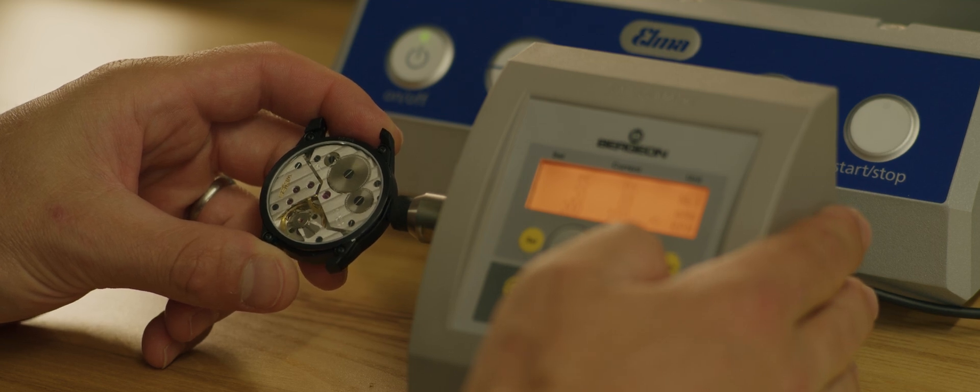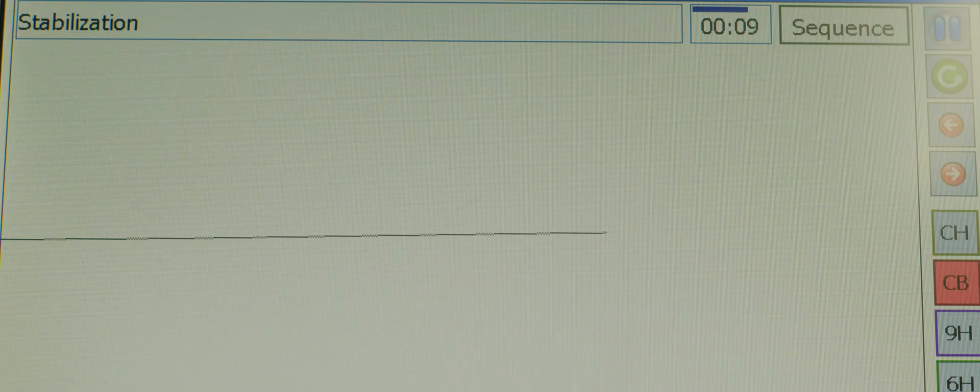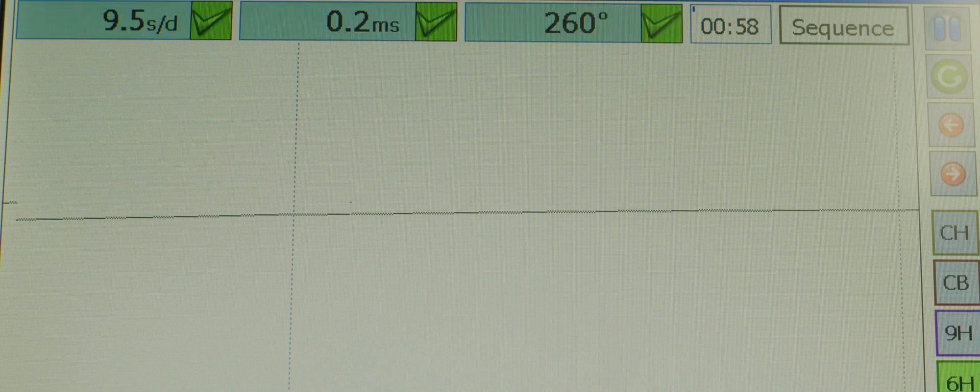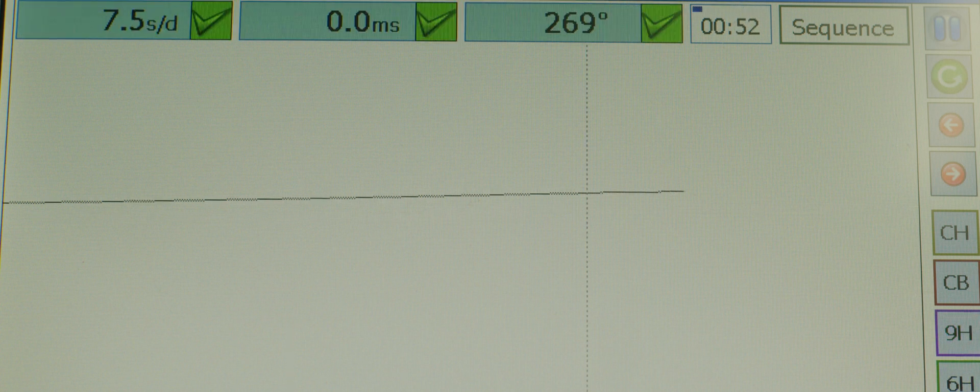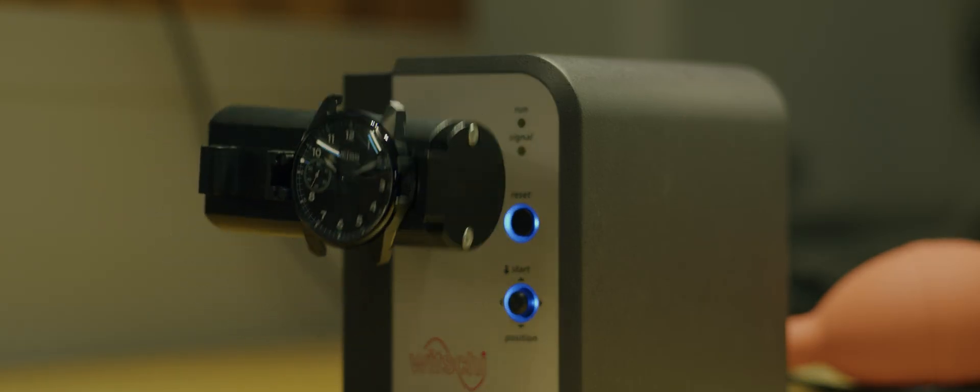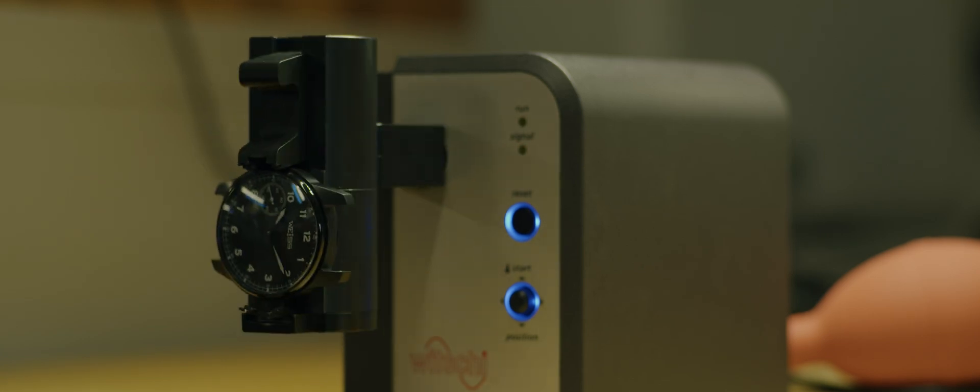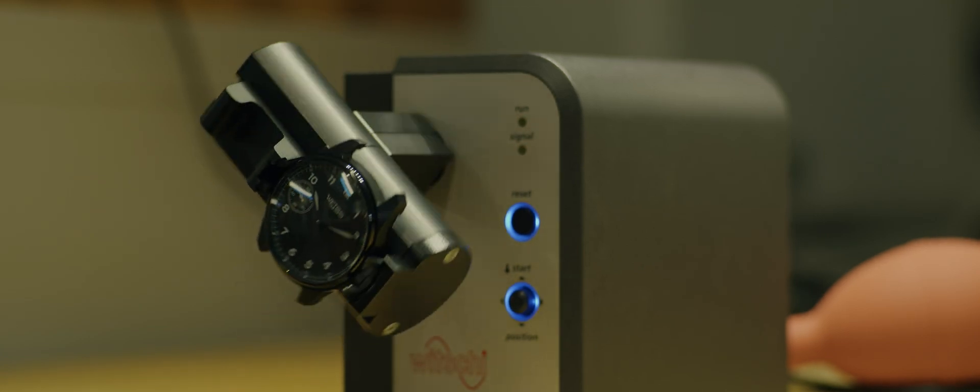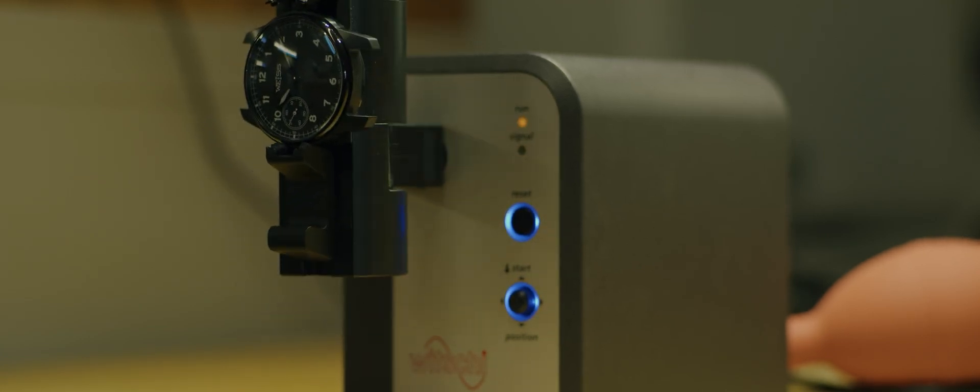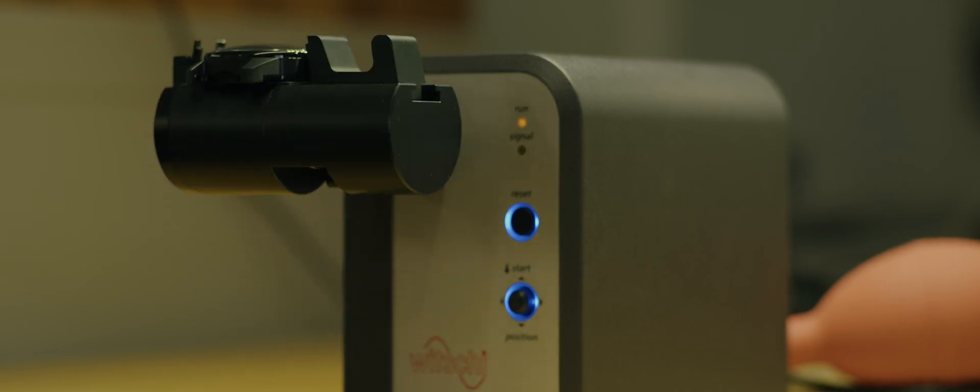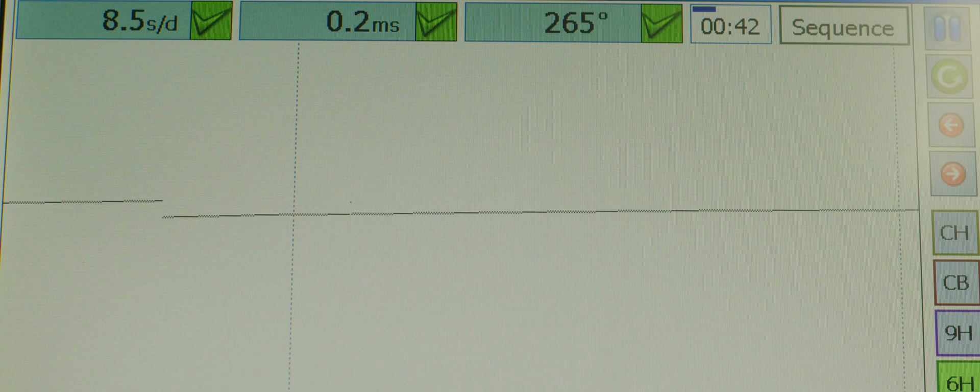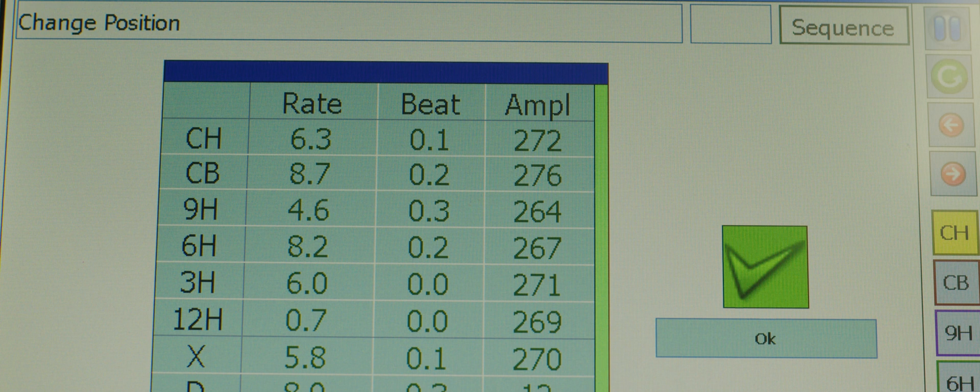The first test for a manually wound watch will be fully winding it and checking the daily rate. We'll also look at the amplitude and the beat error and make sure that all of this is within tolerance. Now with the right equipment, we can simply wind the watch fully, place it onto the timing machine, and it will automatically go through all of the positions and it will reference our known tolerances for each position and give us a green check mark if it has passed that test or a red X if it has failed that test.